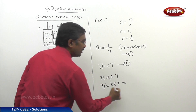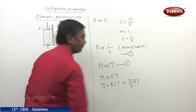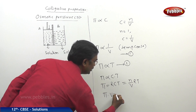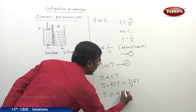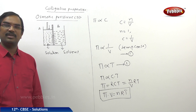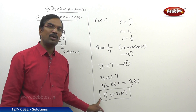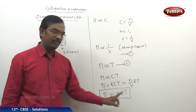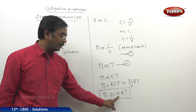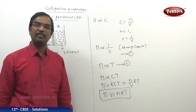Since C equals n divided by V, we can write pi times V equals n times R times T. This looks like the ideal gas equation PV equals nRT, where pi is the osmotic pressure, V is the volume of the solution, n is the number of moles, R is the gas constant, and T is the absolute temperature.